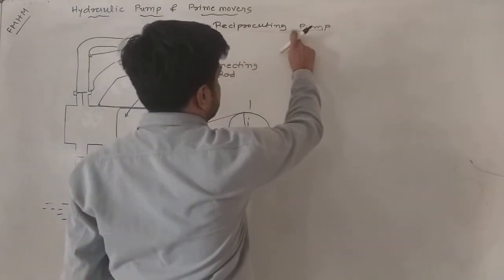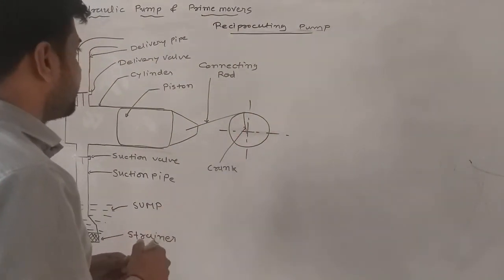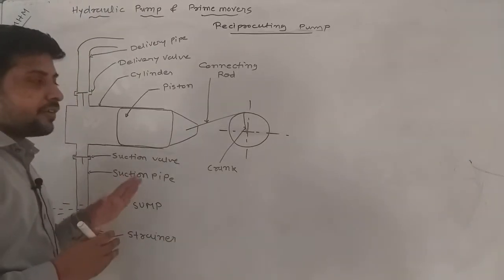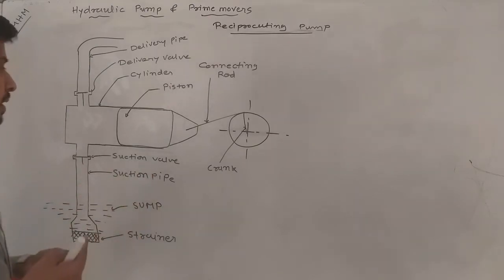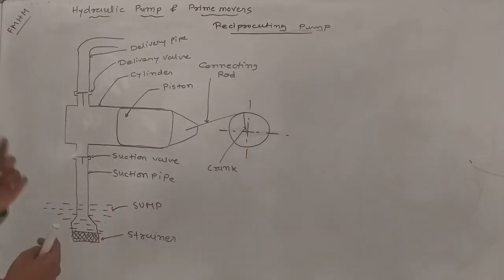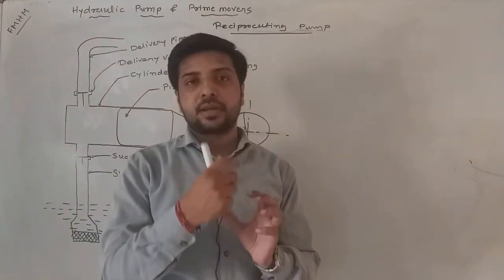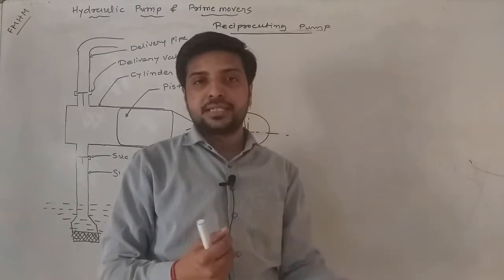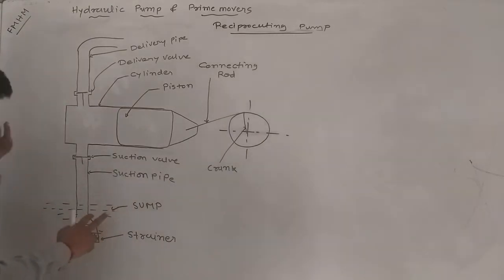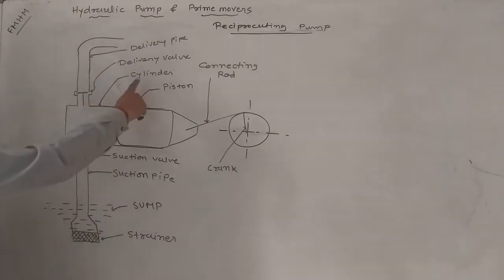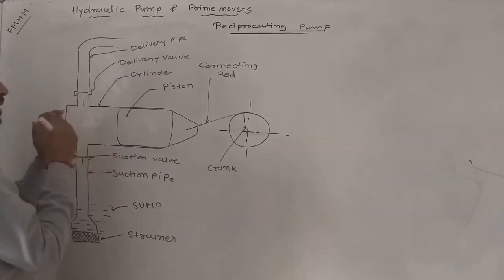The reciprocating pump works on reciprocating motion. The centrifugal pump consists of an impeller and casing. The main components include a suction pipe, suction valve, strainer, delivery valve, and delivery pipe, which pumps fluid from a lower level to a higher level.